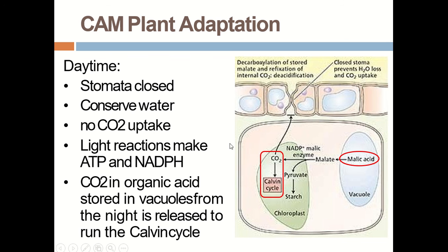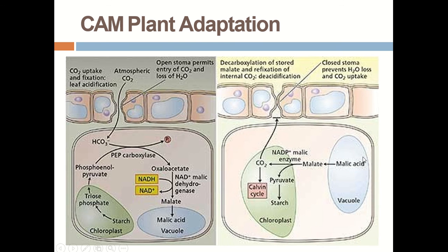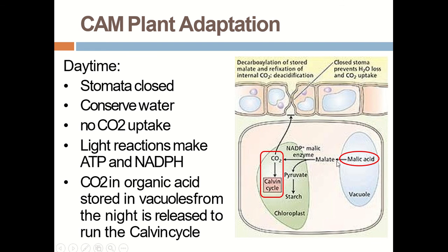CO2 stored in organic acids in the vacuoles from the night is released to run the Calvin cycle during the day. The malic acid stored in the vacuole is converted into malate, which comes into the chloroplast where it is converted into CO2 and pyruvate. CO2 then enters the Calvin cycle and is involved in glucose or sugar formation, while the pyruvate is converted into starch. That is how CAM plants are adapted.